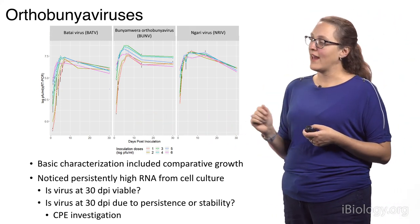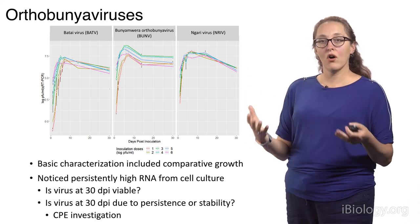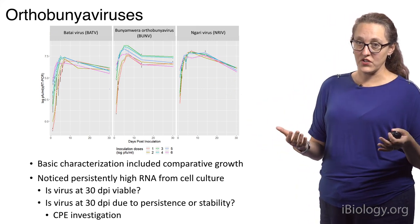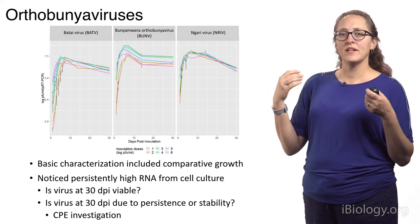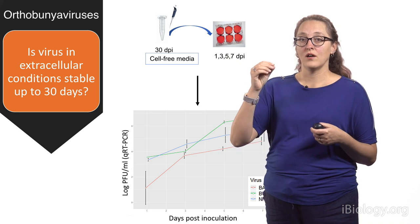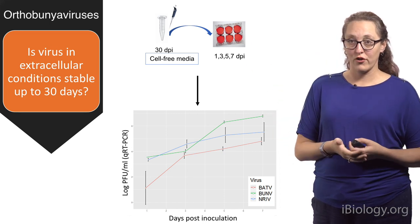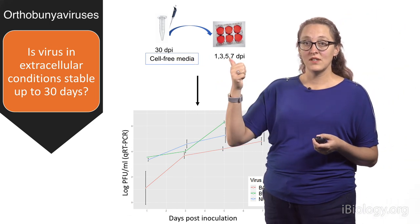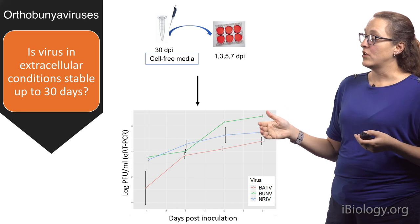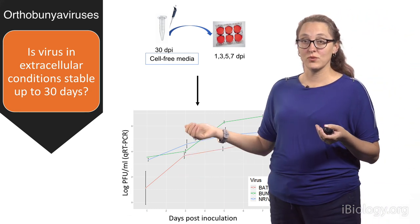We noticed something interesting: at 30 days post-infection, we still had a lot of detectable RNA. We usually test for RNA using quantitative real-time PCR, and we noticed there was a lot of RNA. We wanted to see: does that RNA equal infectious virus? To do that, we took virus and put it in a tube with cell-free media and stuck it in the incubator for 30 days. After 30 days, we put what was in the tube onto new cells and tested over a week. The concept is — if you get more out than you put in, then there was replication. For all three viruses, we did actually get more out than we put in.